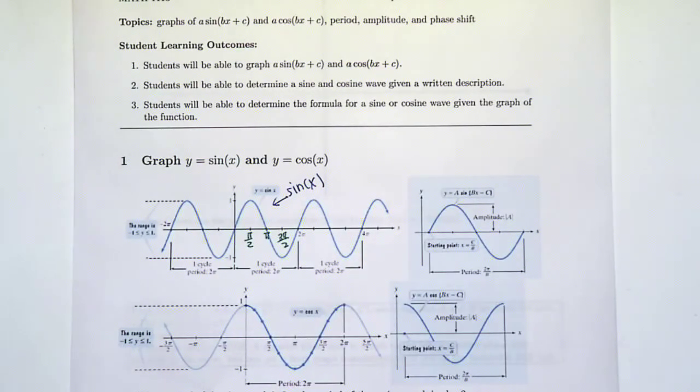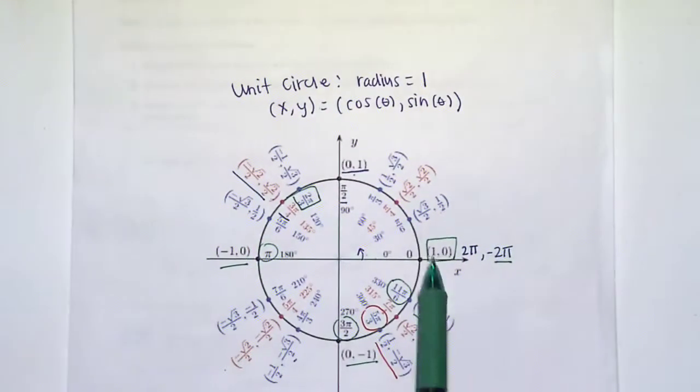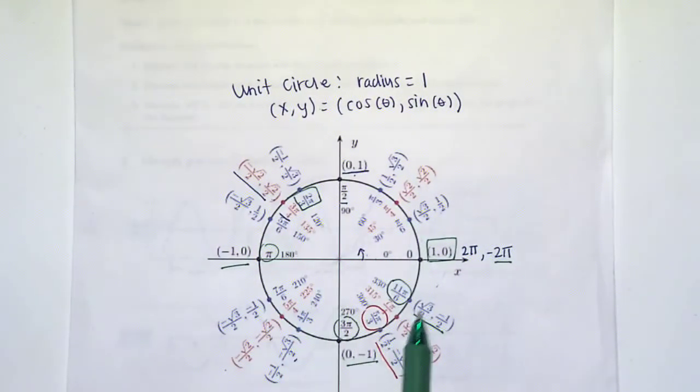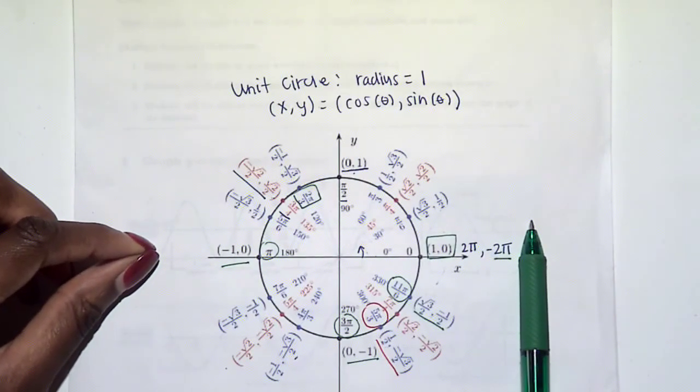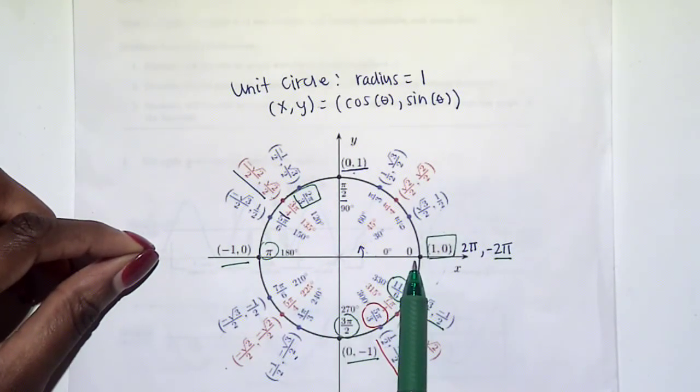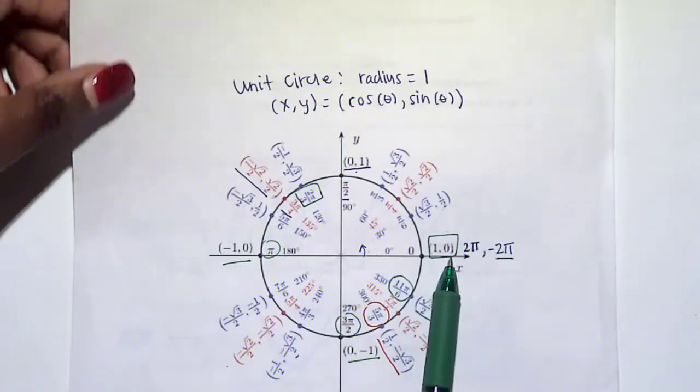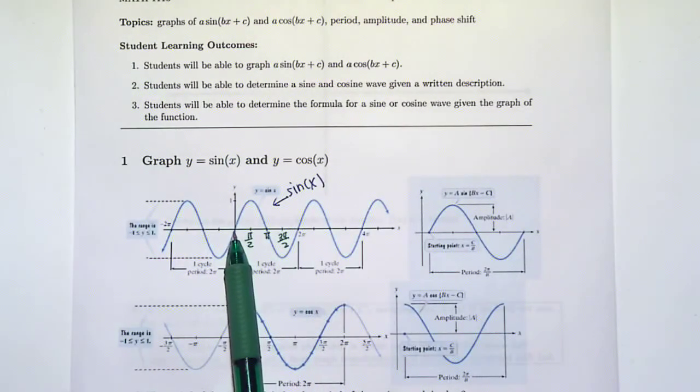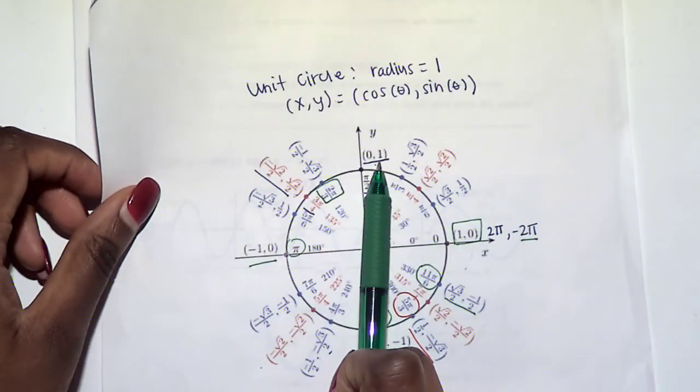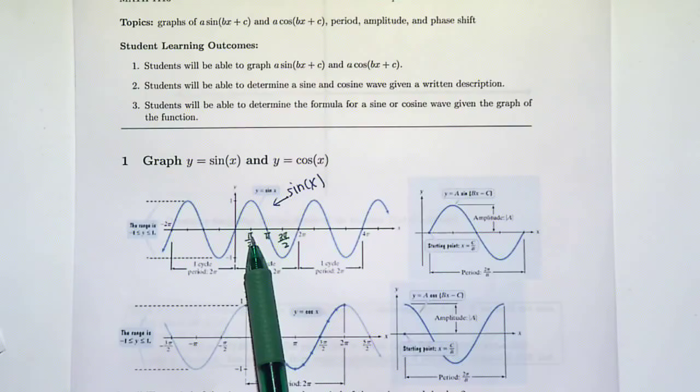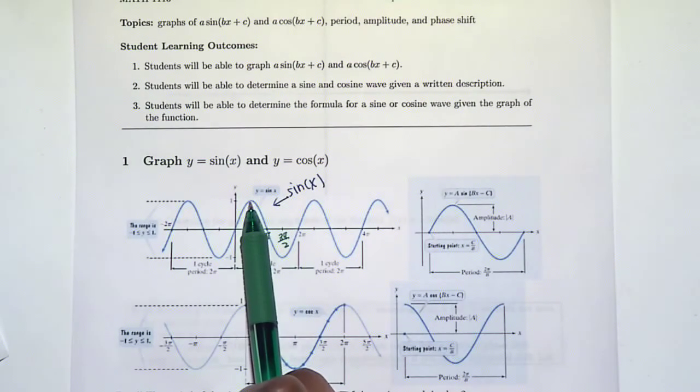Basically what we're doing is we take this unit circle where we can go around and around, and we're stretching it out and just making it into a line. If you look at 0, sine of x is 0. So at 0, we have the point 0 on the graph. At π/2, sine is 1. So at x equals π/2, the function is at 1, y equals 1.